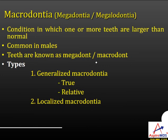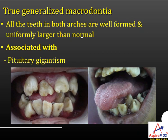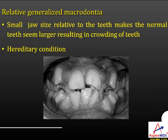Macrodontia, also known as megalodontia, is the condition in which one or more teeth are larger than normal. It is seen more in males. The teeth are also called mega or megalodont. Types include true generalized macrodontia, relative generalized macrodontia, and localized macrodontia. True generalized macrodontia occurs when all teeth in both arches are well-formed but larger in size, as seen in pituitary gigantism. This can cause crowding.